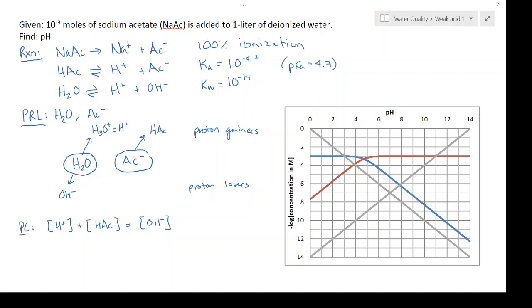Now in the previous video when I solved the pH where acetic acid was being added, the proton condition was equal to the charge balance and you can see that's not the case here. Not only that, you can have things in the proton condition that aren't charged. In this case we have acetic acid that doesn't have a charge and it's in the proton condition. The proton condition can also be derived from a charge balance.